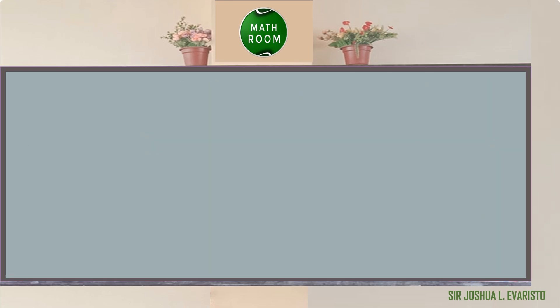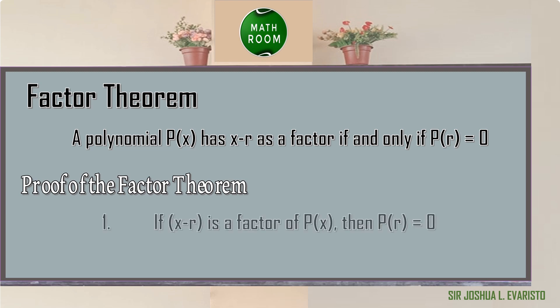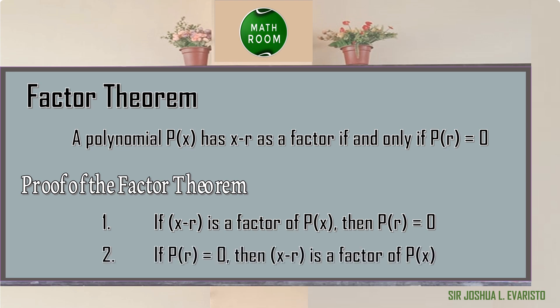Sometimes the remainder when p of x is divided by x minus r is equal to 0. This idea is illustrated by the factor theorem. Factor theorem states that a polynomial p of x has x minus r as a factor if and only if p of r is equal to 0. There are two parts to the proof: if x minus r is a factor of p of x, then p of r equals 0; and if p of r equals 0, then x minus r is a factor of p of x.